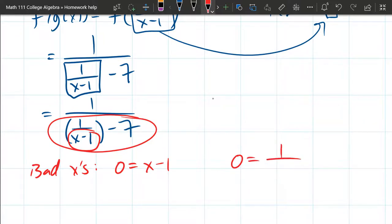So I'm just gonna write that. One over x minus one minus seven. So we're expecting two bad x values here. One of them is really easy to see. Add one to both sides. One equals x, that's a bad x value. You probably saw that almost instantly.